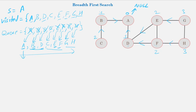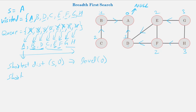From the figure we can also infer that we are able to calculate the shortest distance of all vertices from the source node. For example, the shortest distance from A to G is simply the level of G. In general, for an undirected graph, the shortest distance from the source node to any given vertex V is equal to the level of vertex V.